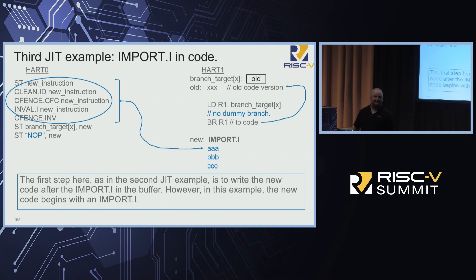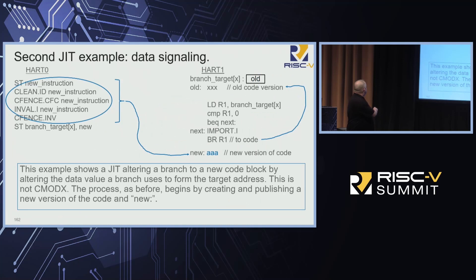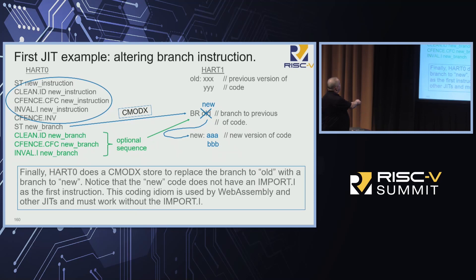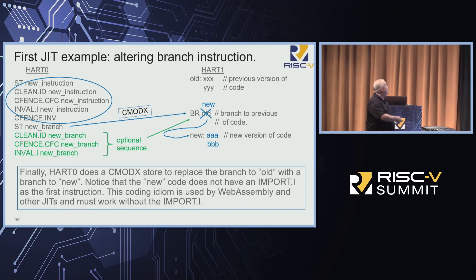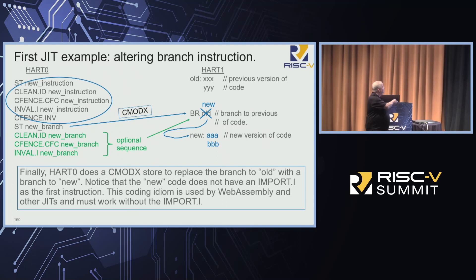That's why JIT people like C mod X — they don't have to do the full dance. The reason for C mod X is to avoid all the invals and cleans. The problem with C mod X is that it doesn't hit everybody immediately, so if you really want to be sure — it could be a long time on a hart before it rolls out of your three-meg I-cache — you do the clean-fence-inval sequence to cause that to happen quickly. The idea is they don't want to do a full dance on every branch change; they just let it propagate somewhat loosely and do this as optional if they care about how fast people pick it up.